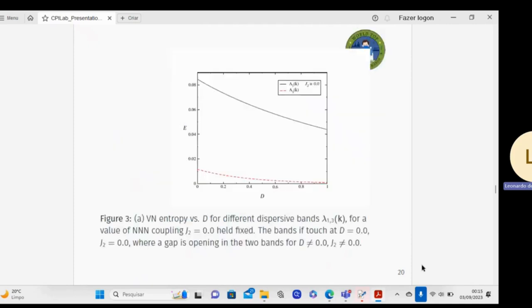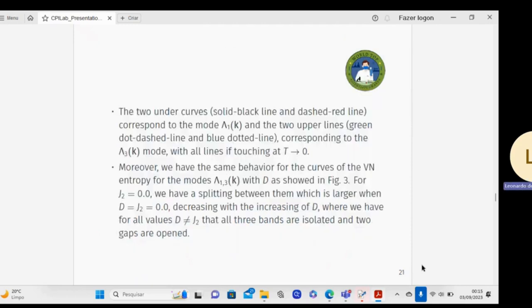In figure three, I have the von Neumann entropy as a function of the Dzyaloshinskii-Moriya for different dispersive bands, lambda one and three. The two under curves, solid black line and dashed red line, correspond to the mode lambda one k, and the two upper lines, green dot-dashed line and blue dotted line, correspond to lambda three mode, with all lines touching at temperature zero limit.